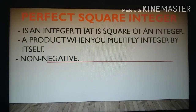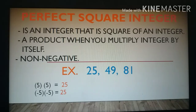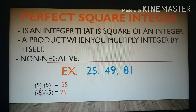A perfect square integer is an integer that is a square of an integer — a product when you multiply an integer by itself, and the result is always non-negative; the perfect square is always positive. For example, 25, 49, and 81. 25 is a perfect square because there are certain numbers when you multiply by itself the result is 25, like 5 and negative 5. For example: 5 times 5 equals 25, and negative 5 times negative 5 is also equal to 25.